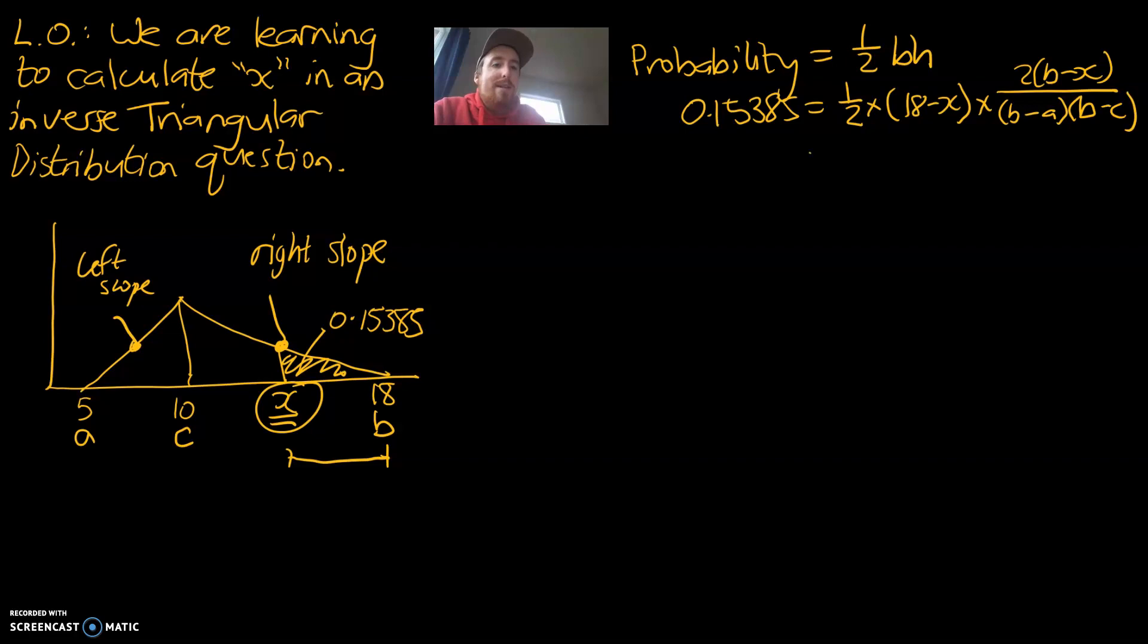We can then start our simplifying process. Let's get rid of this times one-half. The opposite of times one-half is divided by one-half. So, we're going to divide by one-half. And we're going to multiply that by... So, that is equal to 18 minus x, which is the base, times the height, which is 2 times b, in our case, is the maximum, 18 minus x.